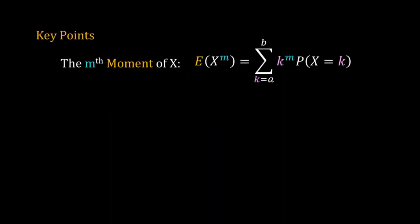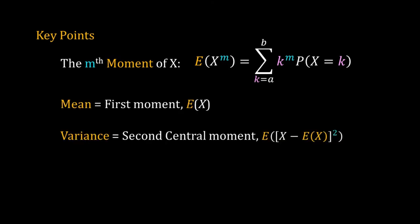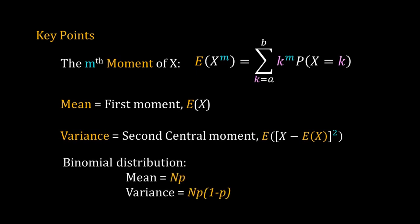In this video we have learned the definition of the mth moment of a discrete random variable. Using this definition, we can calculate different moments of different discrete probability distributions. The first moment is the mean of a distribution, and the second central moment is the variance. The mean of the binomial distribution is np, where n is the number of trials and p is the probability of success, and the variance is np(1 − p).